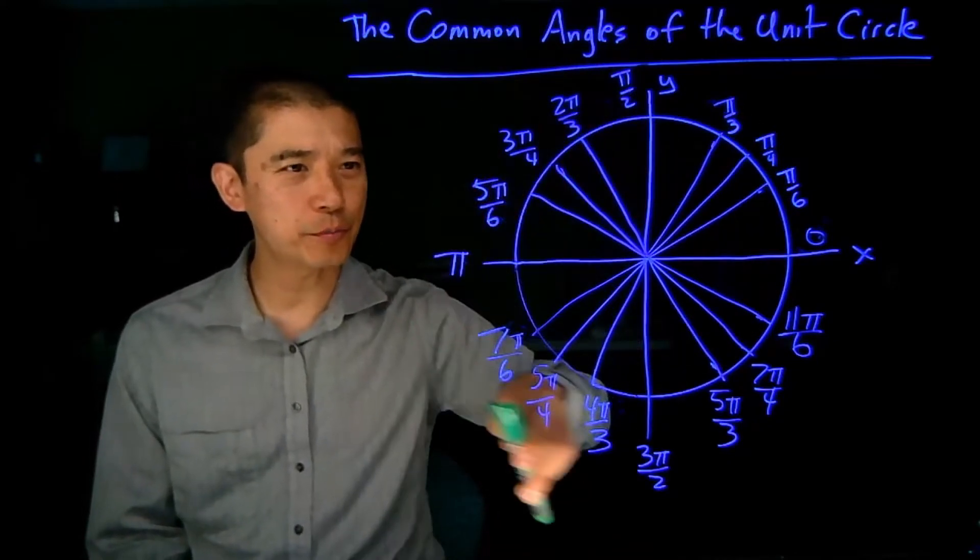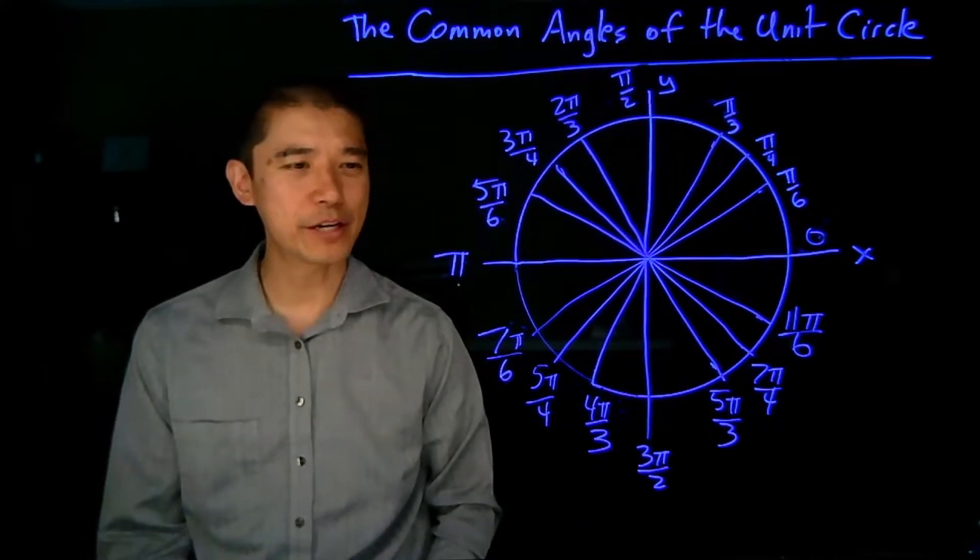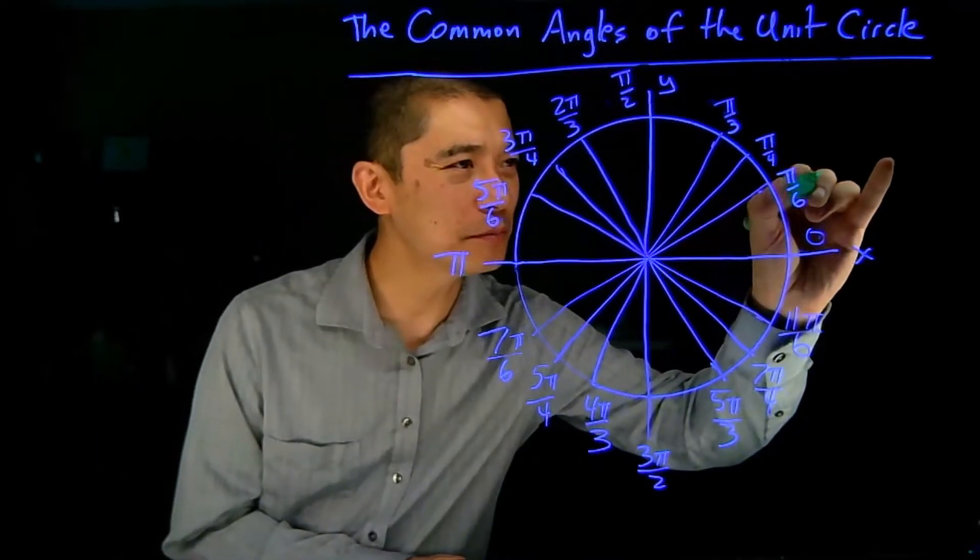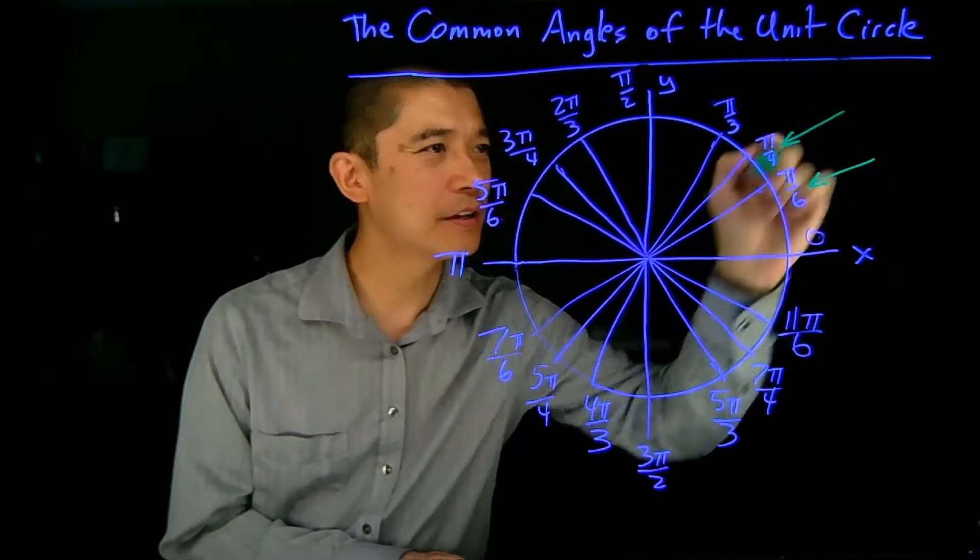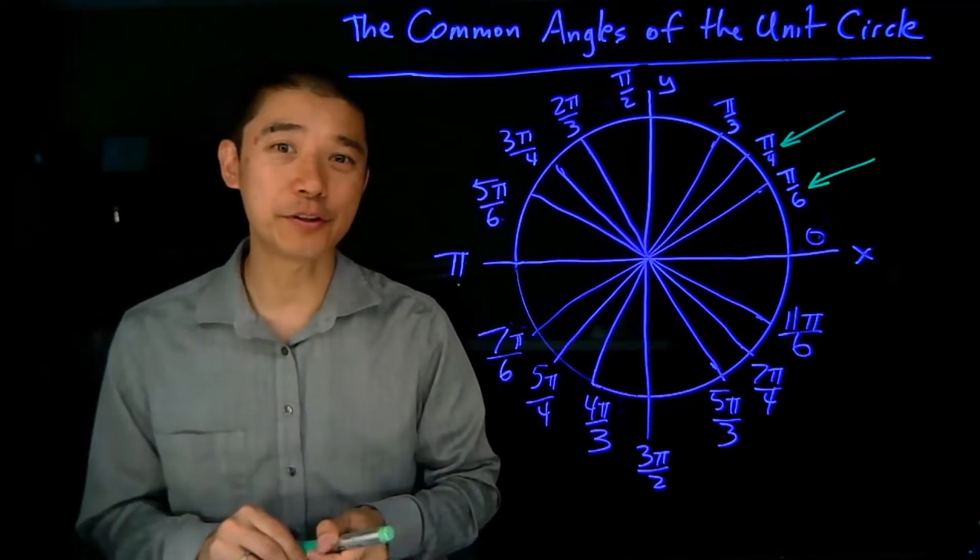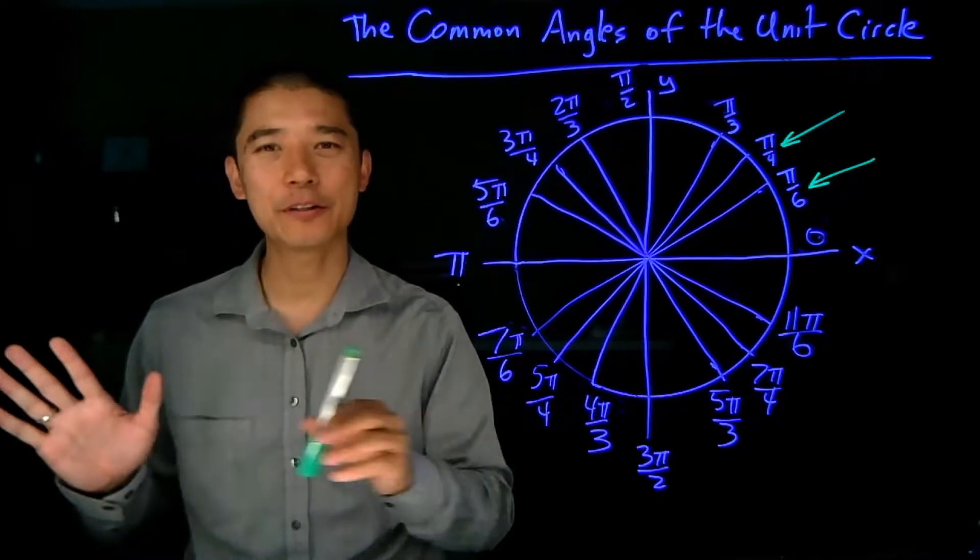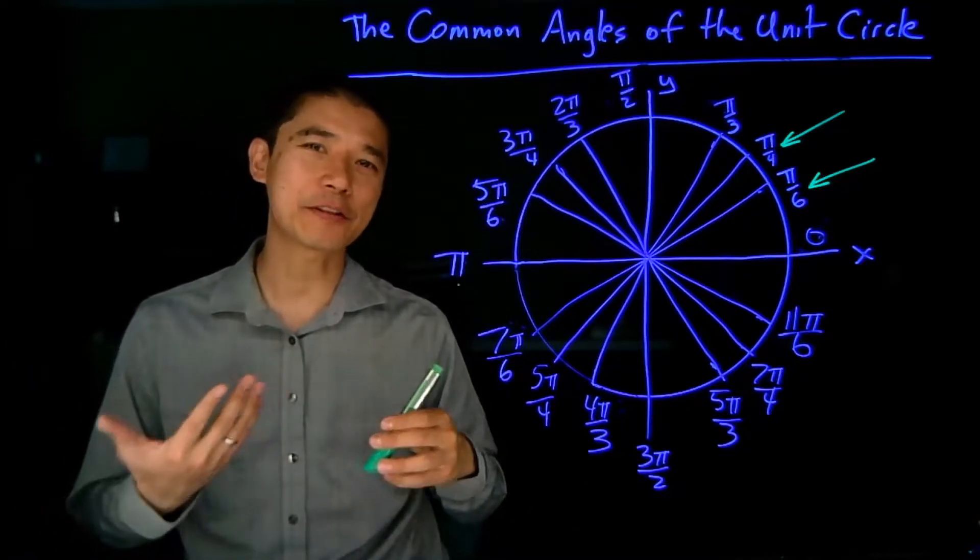Here's the exact same unit circle picture except with the angles measured in radians. Now again, we're going to focus on these two right here. So π over 6 is the same as 30 degrees, and π over 4 is the same as 45 degrees. All we need to do is follow the exact same process, but now we also have to think in fractions.